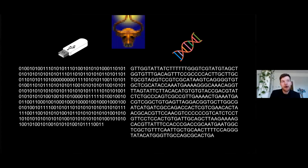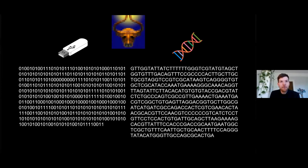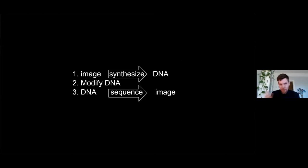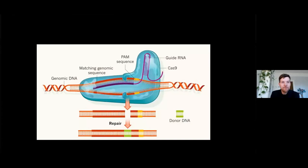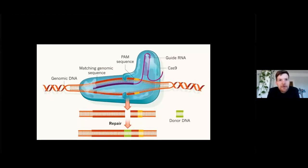We didn't do the whole bull's head at once - we had four parts of 1950 base pairs each, because we were reaching the limits of what can be synthesized by DNA synthesis companies. So we took an image, synthesized the DNA, modified it with CRISPR, and then sequenced the modified DNA to get the image back.